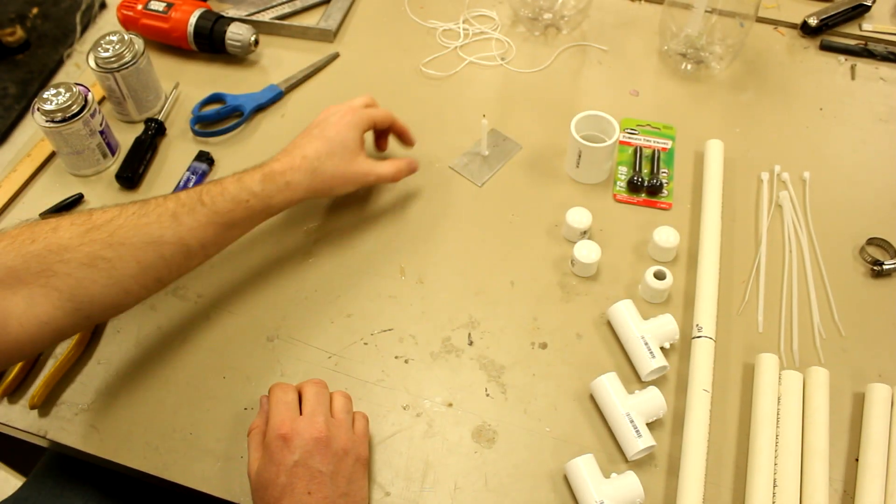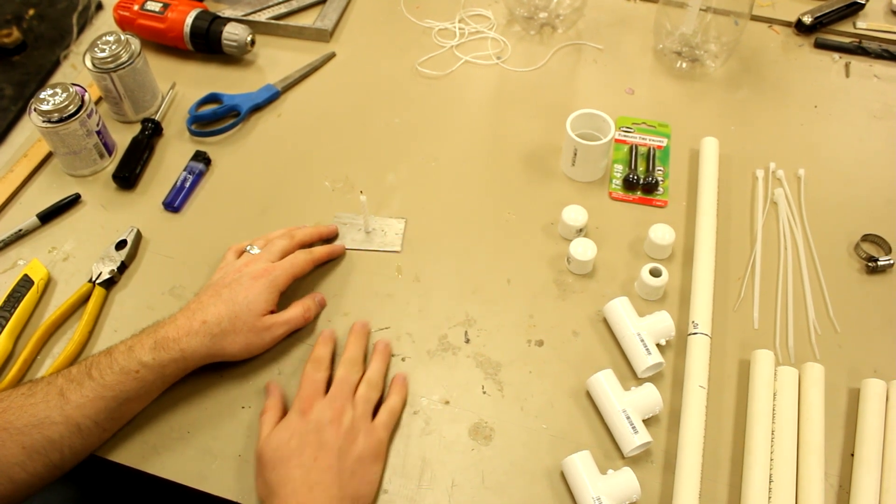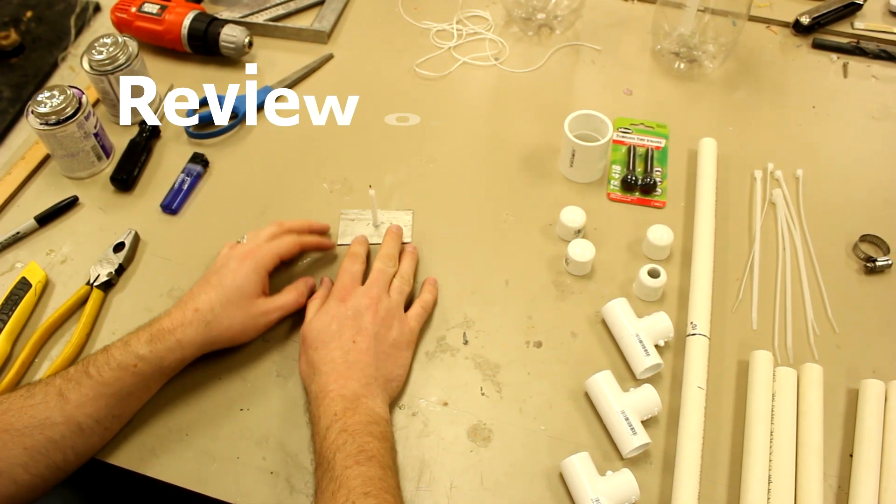And lastly, this isn't necessary but it's nice to have a birthday candle. And this will help us in just a minute to bend some of our tubing real quick.